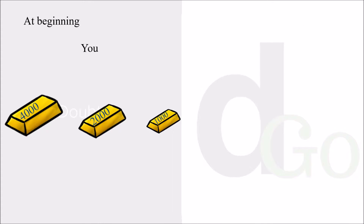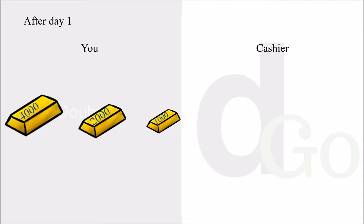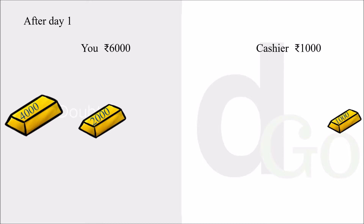On the first day, at the beginning, you have all three gold bars and the cashier has nothing. You have in total seven thousand rupees and the cashier has zero rupees. After day one, you give the one thousand gold bar to the cashier. Now you have rupees six thousand value with you and the cashier has rupees one thousand.